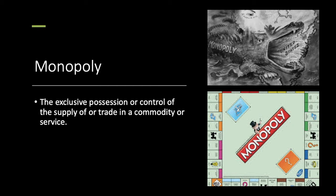Next word is monopoly — you've probably heard of the game. When you monopolize something, you have the exclusive possession or control of the supply or trade of a service. A monopoly is basically owning everything — owning the rights to everything or being able to provide your service to everybody. For example, if you were a plumber and the nearest other plumber was 300 miles away, you've monopolized the area because there's no one else anyone can call.